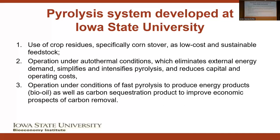This slide summarizes the characteristics of the pyrolysis system developed at Iowa State University. It uses crop residue, specifically corn stover, as a low-cost and sustainable feedstock. It operates under autothermal conditions, which eliminates external energy demand, simplifies and intensifies pyrolysis, and reduces capital and operating costs. Like all fast pyrolysis systems, it produces energy products as well as a carbon sequestration product to improve the economic prospects of carbon removal. Additionally, we do some unique things to recover not simply bio-oil, but produce it as both a sugar and a phenolic oil product.